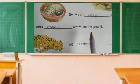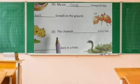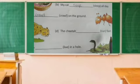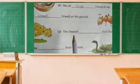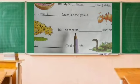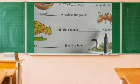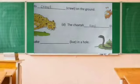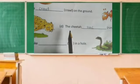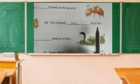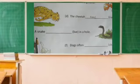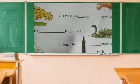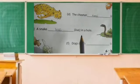(d) The cheetah dash fast. The noun 'cheetah' is in singular form, so the verb ends with 's' — the cheetah runs fast. (e) A snake dash in a hole — a snake lives in a hole.